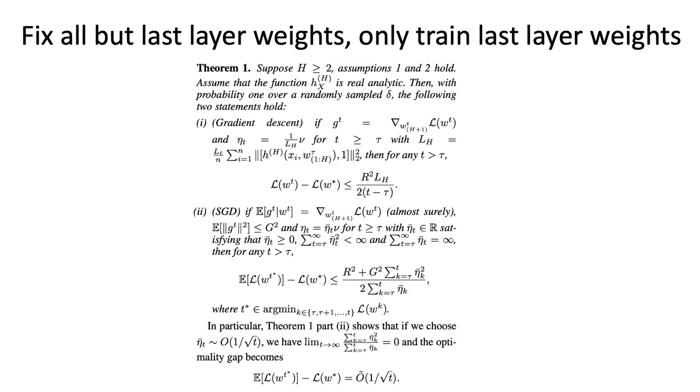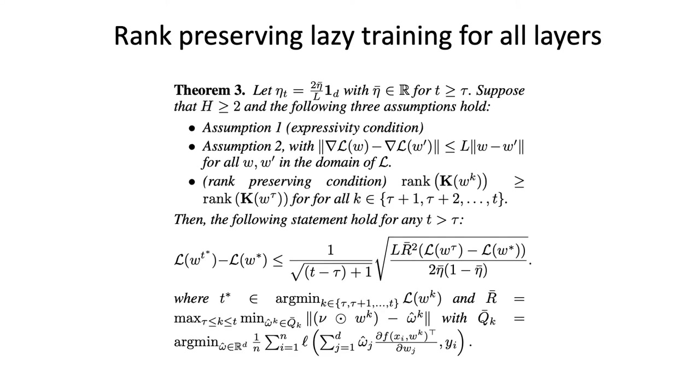There are two versions of our theorem. First it's about fixing all but last layer weights and training the last layer weights in the second phase. The second is about the general rank-preserving lazy training for all layers. We can say in both cases, the convergence rate is 1 over square root of t.